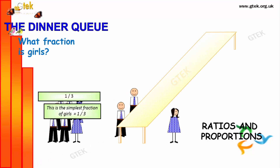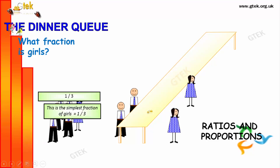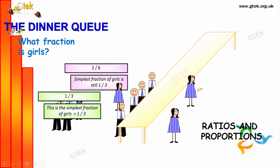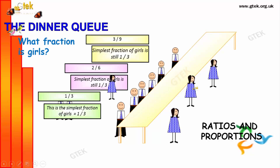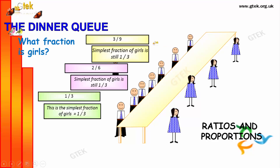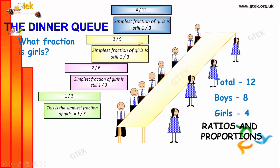Now, we will talk about fractions based on girls. 1 out of 3. 2 out of 6. You can see here. 3 out of 9. 3 by 9. 4 out of 12. We got 4 out of 12. So, the simplest fraction is obviously 1 by 3.